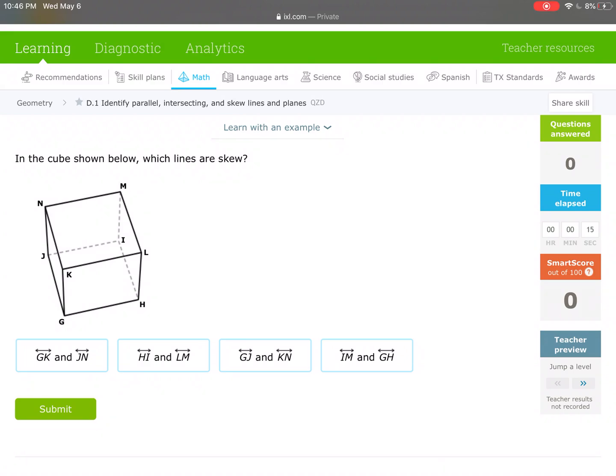Hey everyone, this is Mr. Mannion covering geometry. Today we're going to identify parallel, intersecting, and skew lines and planes. In geometry, there's a lot of new vocabulary that you're learning, and one of those is skew lines. Now skew lines are lines that are not in the same plane and do not intersect.